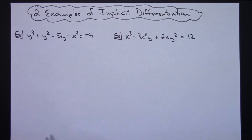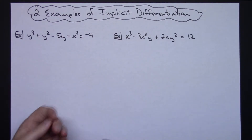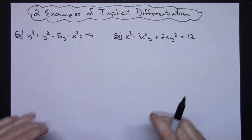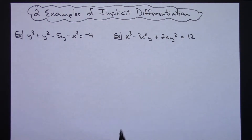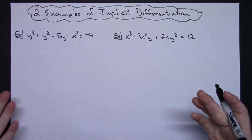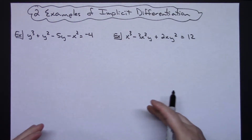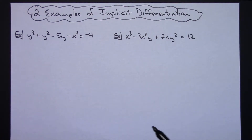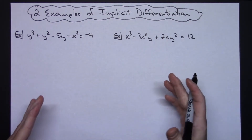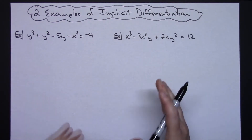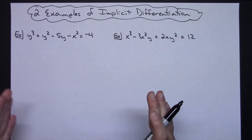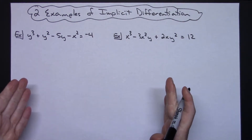In this video I'm going to do two examples of implicit differentiation. I am assuming that you have already been taught how to do implicit differentiation and you're just needing to see some extra examples, some more practice with this, because maybe there are some things that you're unclear with.